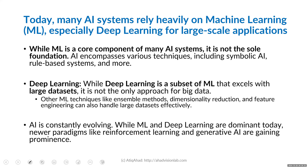Today, many artificial intelligence systems rely heavily on machine learning, and especially deep learning when doing large-scale applications based on larger datasets. Machine learning is not 100% equivalent to artificial intelligence, but modern AI systems are almost all based on machine learning, and for big projects deep learning is the default approach.